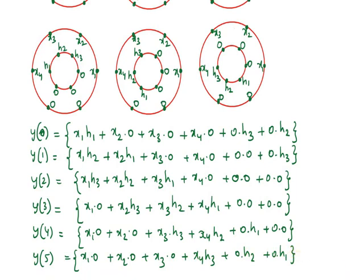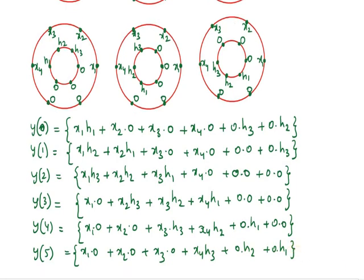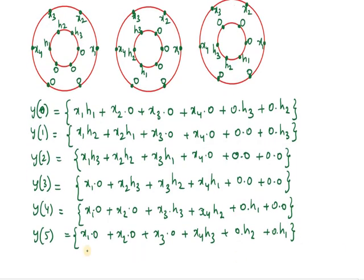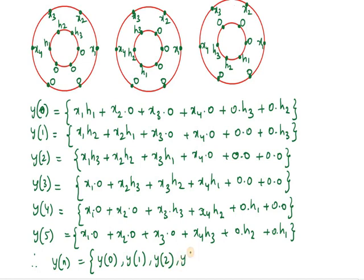Add all of these values and you can write the output. Therefore, y(n) is equal to the sequence: y(0), y(1), y(2), y(3), y(4) and y(5). This is how we perform the circular convolution using the concentric circle method.